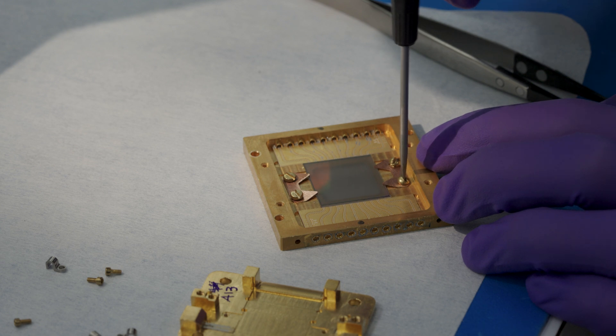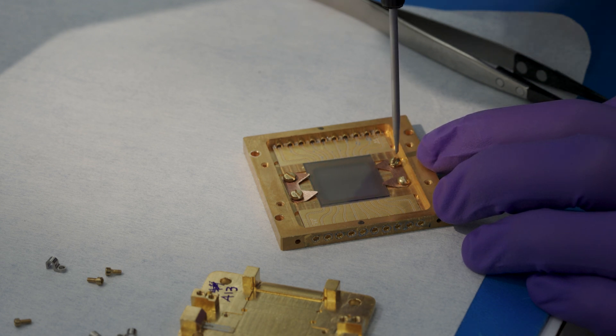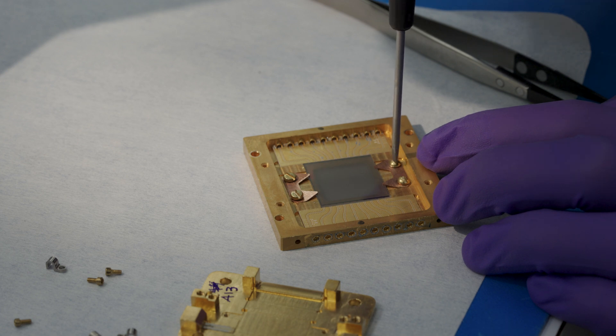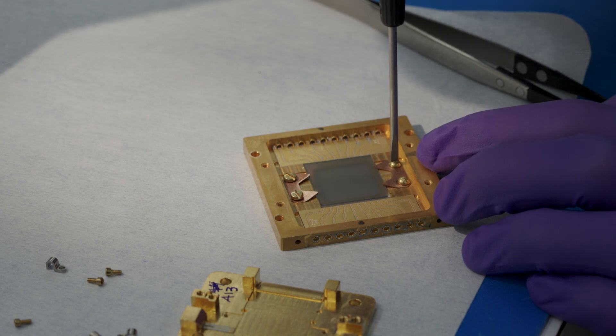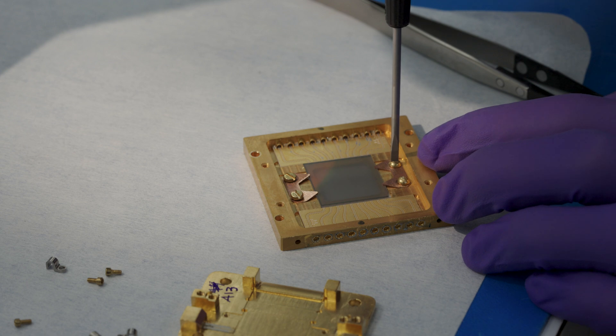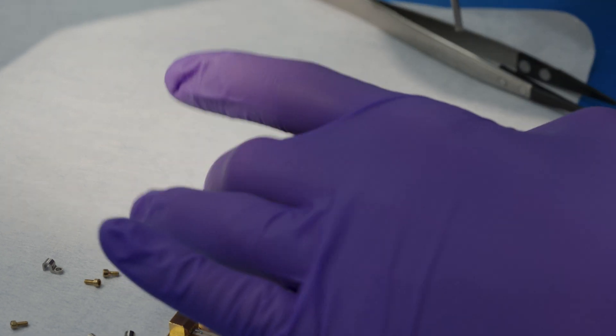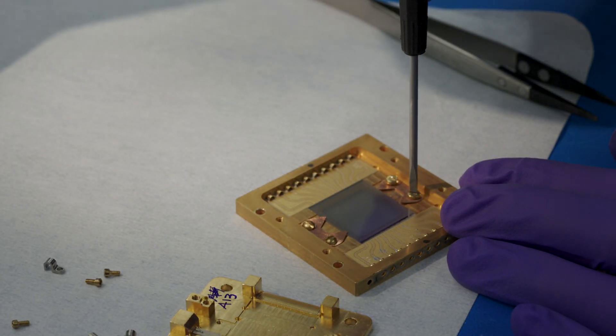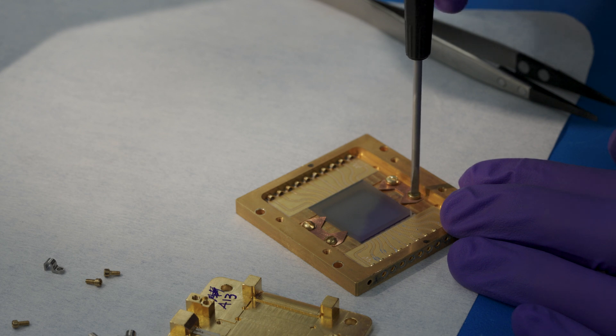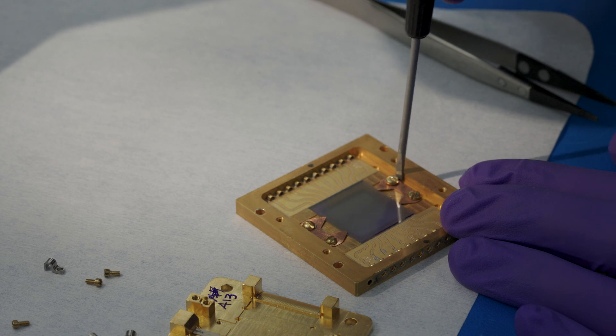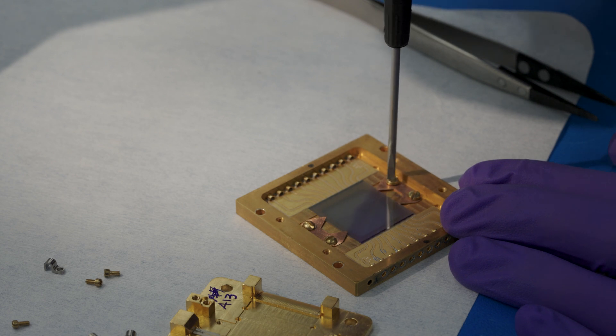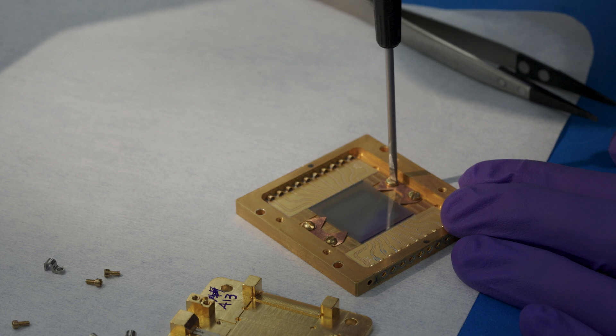Alright, so now we have the new device from Lincoln Labs mounted into our sample box. We'll have some other videos showing how we made that sample box, but Hawkins right now is tightening down these beryllium copper spring clamps that are going to hold the device in place. So once it's held down, we will then go ahead and wire bond it up.